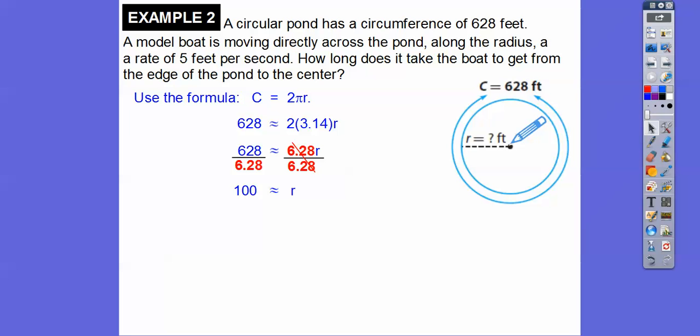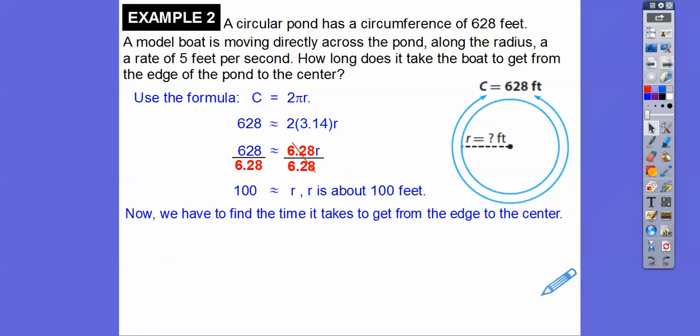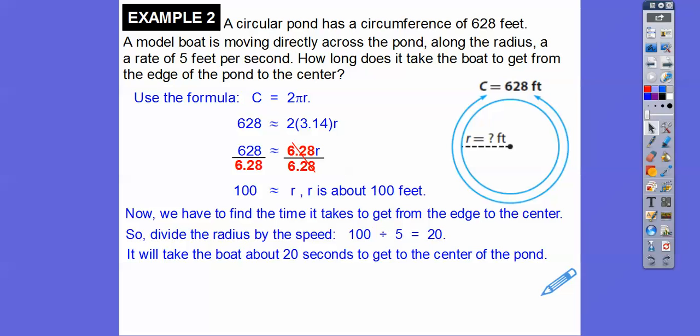So if that's 100 feet, and this model boat is moving 5 feet per second, then we take this 100 and we're going to divide it by the speed of 5 feet per second. So now we're going to divide that right there. And we get 100 divided by 5 is 20. So it's going to take the boat about 20 seconds to get to that center of the pond.